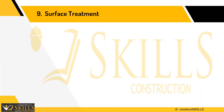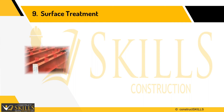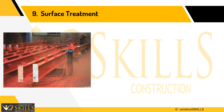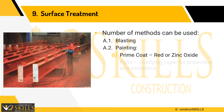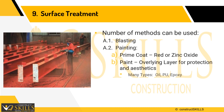Surface treatment is the process in which the structure surface is cleaned. A number of methods can be used, like blasting followed by applying paint, which is the most common method. Painting is usually a two-step process: application of red oxide or zinc oxide primers, and then application of oil paint, epoxy, or polyurethane type paints. Galvanizing is also done for surface treatment, which is long lasting.